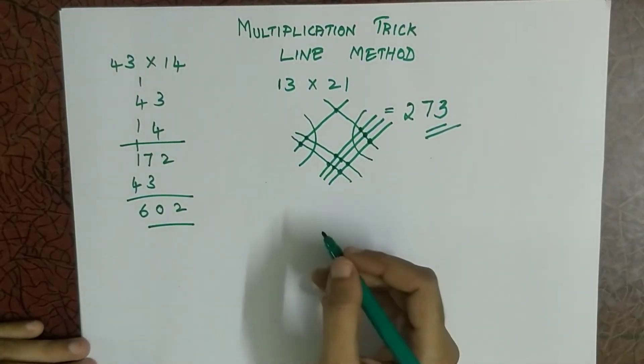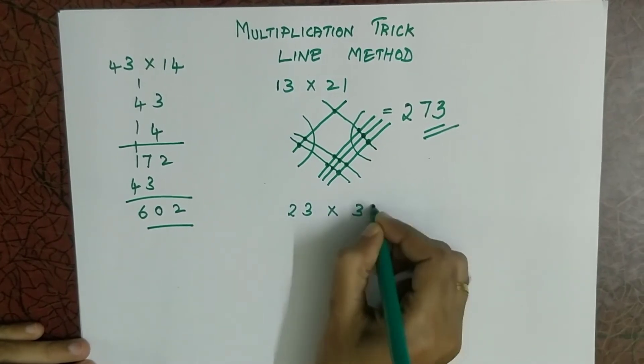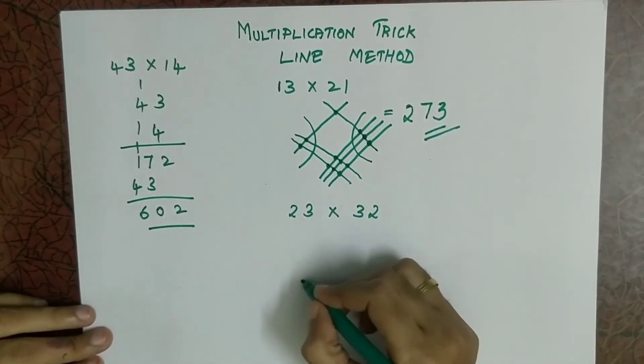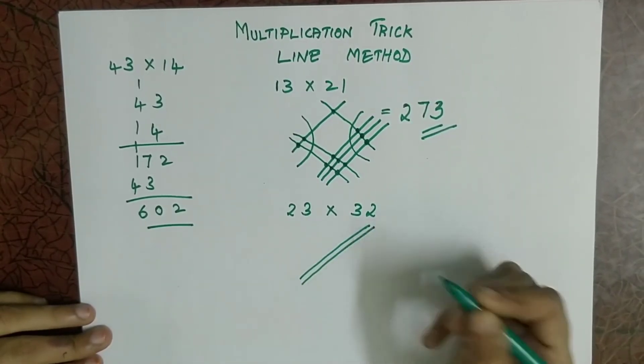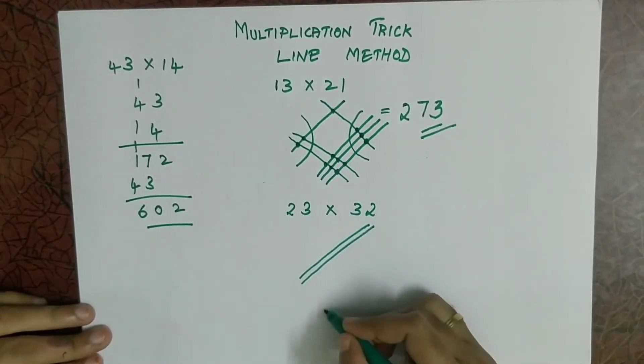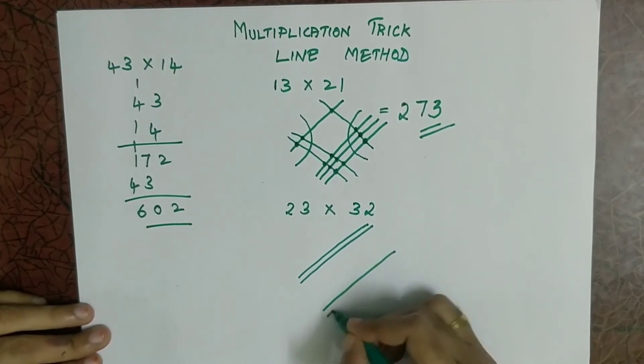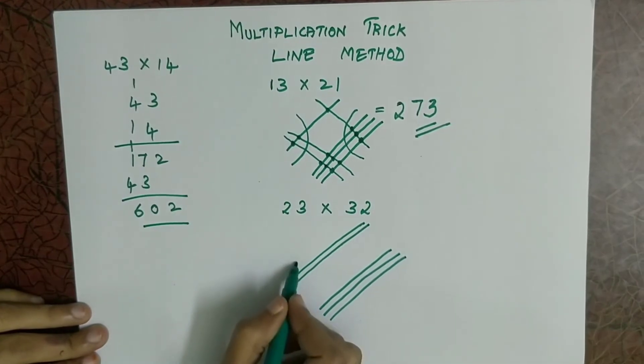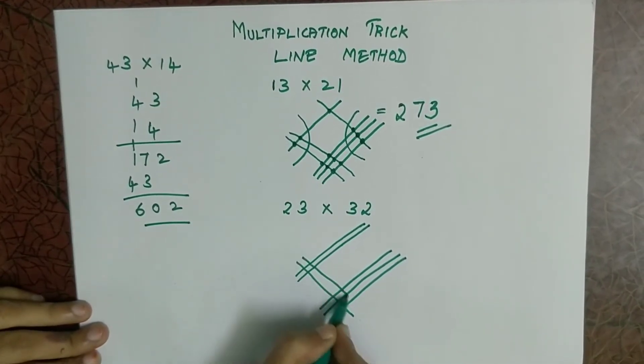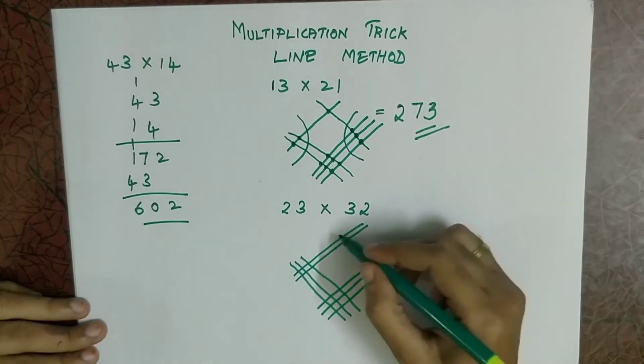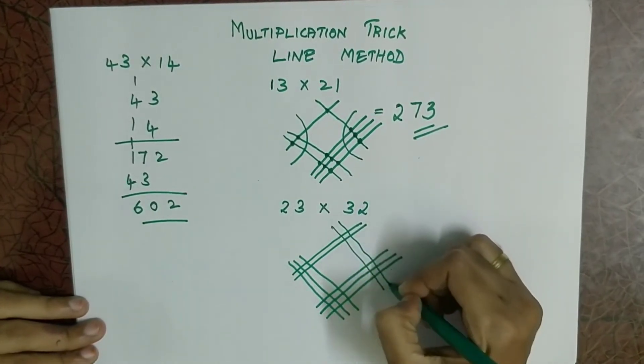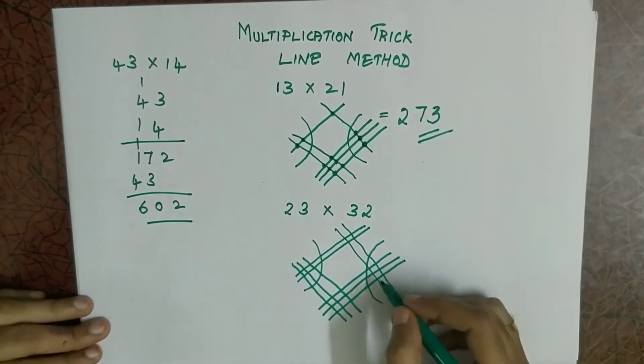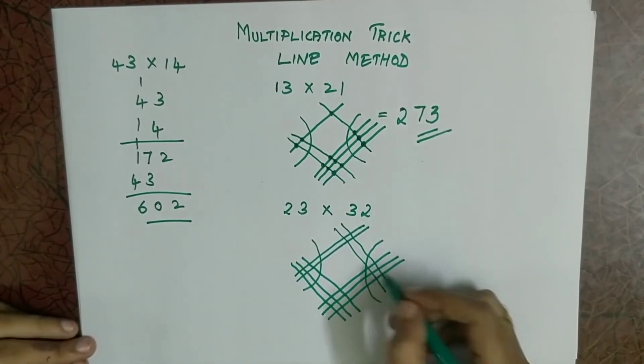Let's see another example. So 23 into 32. So first you have to draw 2 lines diagonally like this and then 3. So you have to leave some space and then draw 3 lines. Then 32, 3 lines this side and 2 lines here. So now you have to split this side and this side. So now you have to count all the joining points.